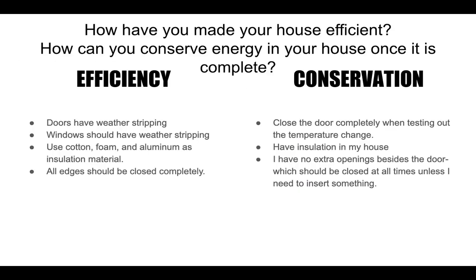My house was efficient because I had weather stripping on the doors and windows. I used different materials all over the house for insulation — cotton, foam, and aluminum — and I made sure that all my edges were completely closed. Every time I was testing my house, I made sure the door was completely closed, I had insulation throughout, and there were no extra openings or gaps. So I hope you like my house, thank you.